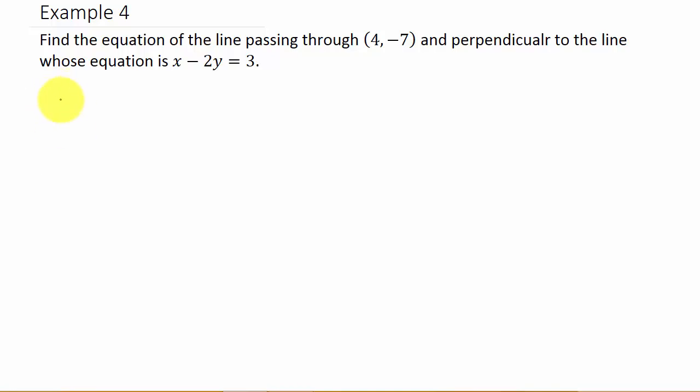Alright so what we need to do is we need to take the x minus 2y equals 3 and we need to find the slope of this line. Well if you remember y equals mx plus b that's the slope intercept form. And remember if you have an equation of a line and it's solved for y then the number in front of x is your slope.